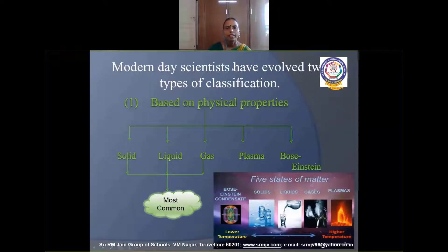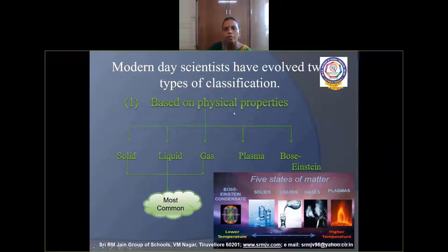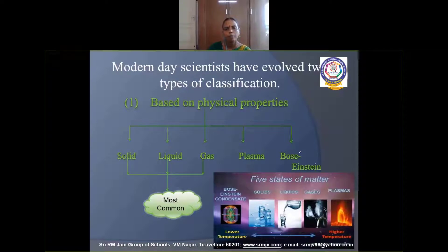Modern day scientists have evolved two types of classification based on physical properties. Physical properties are the characteristics of matter which can be observed or measured without changing the chemical composition. Based on physical properties, matter can be classified into five types: solid, liquid, gas, plasma, and Bose-Einstein condensate.